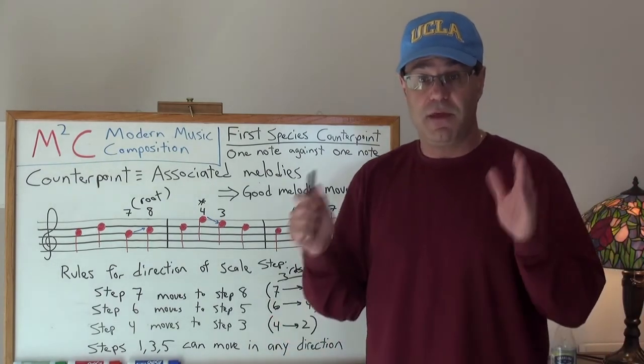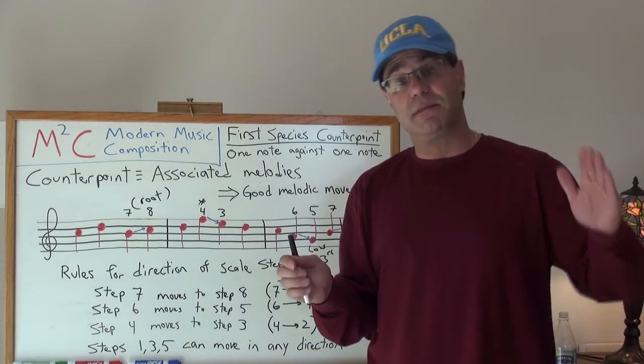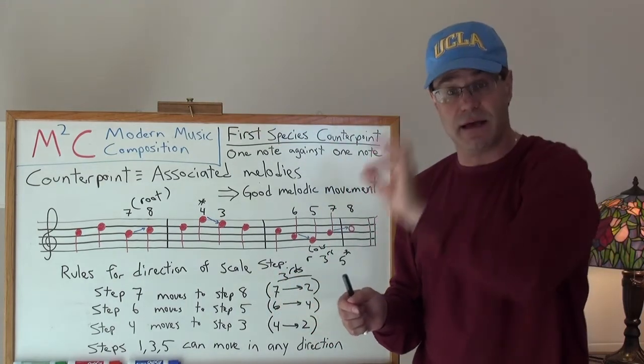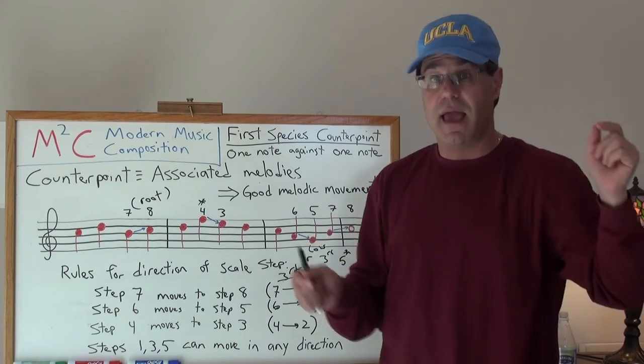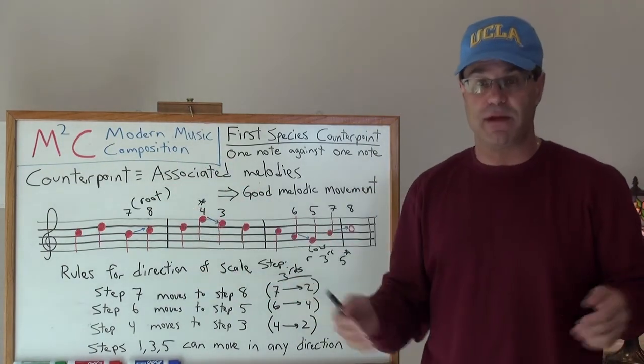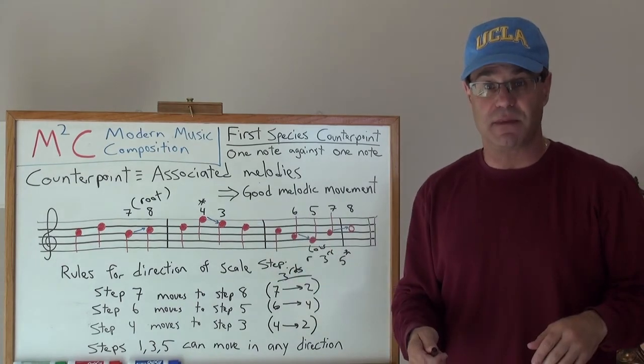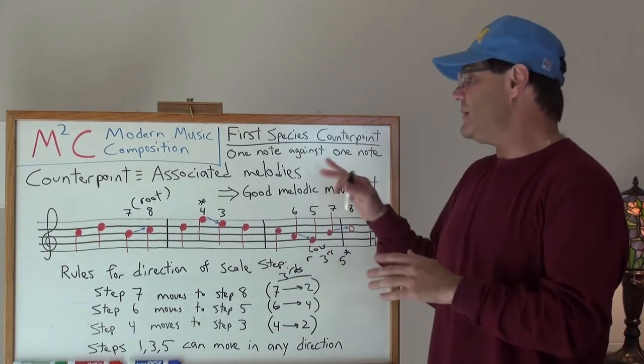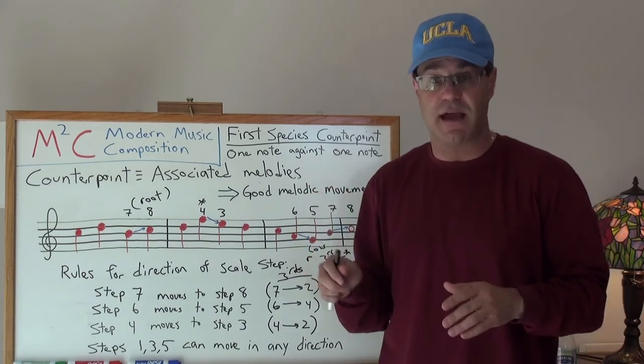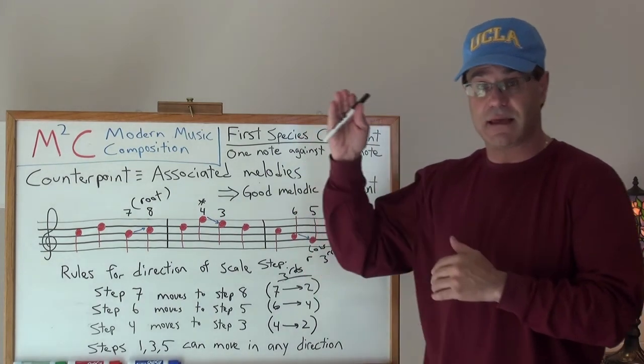So, think about your melody. Think about something that's smooth, doesn't have too much jaggedness to it, has a single high, a single low, and build one out, three or four measures, three, four measures long.